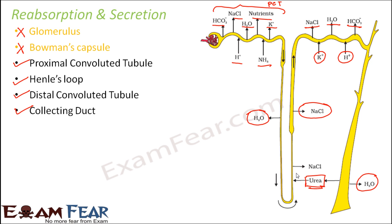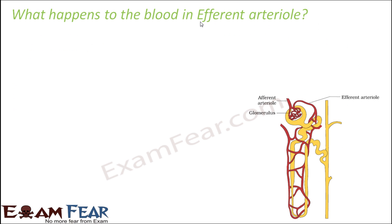Now, something we did not talk about: once blood reaches the glomerulus through the afferent arteriole and gets filtered, what happens to the concentrated blood that went out through the efferent arteriole? This blood contains RBCs, which are quite large, as well as big proteins that were not able to move through the filtration slits into the Bowman's capsule. So the big proteins and RBCs remain in the blood in the efferent arteriole.